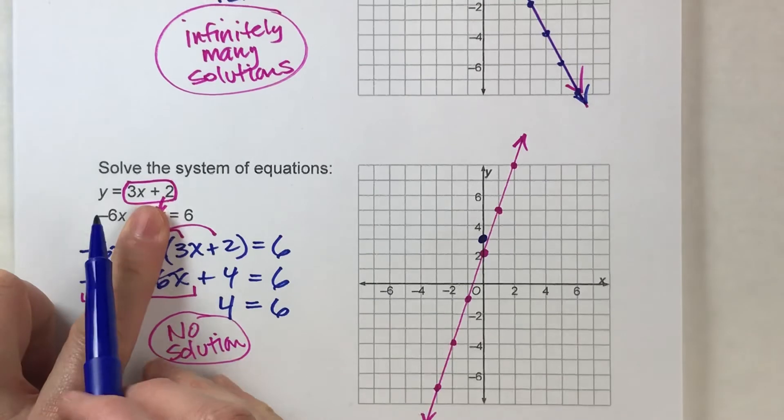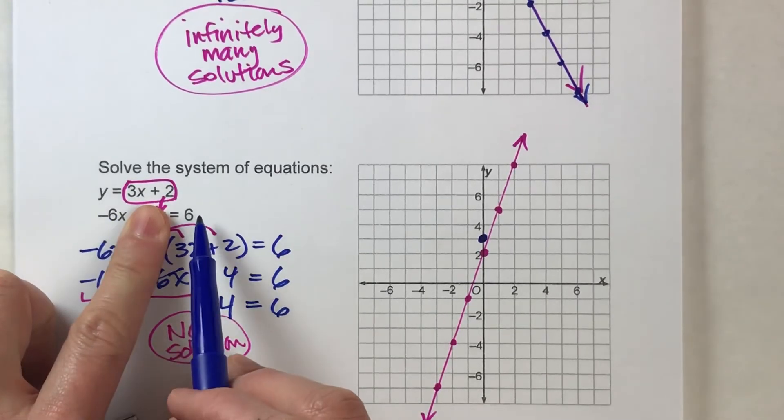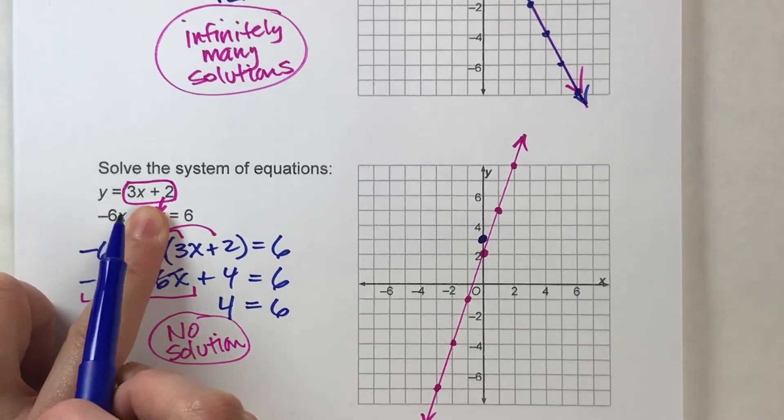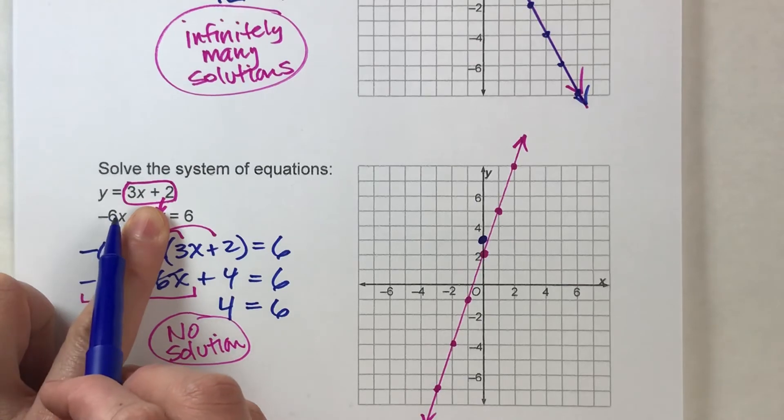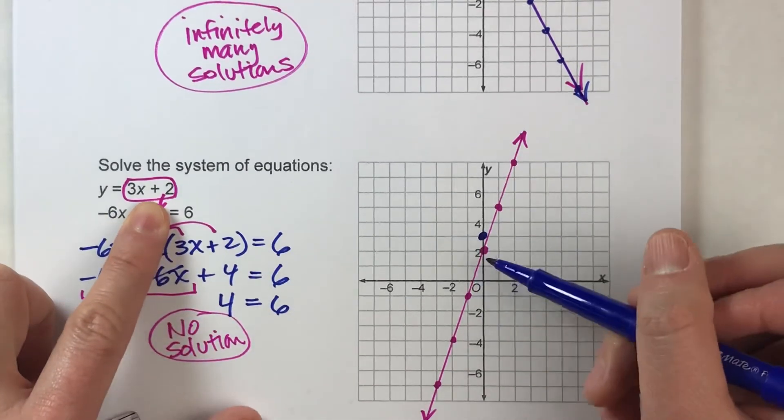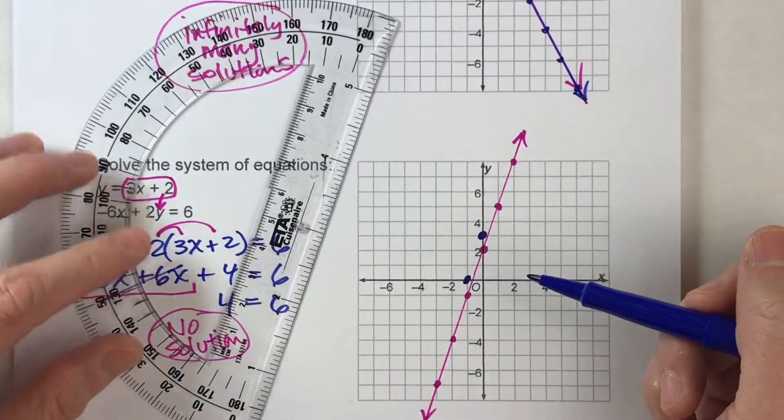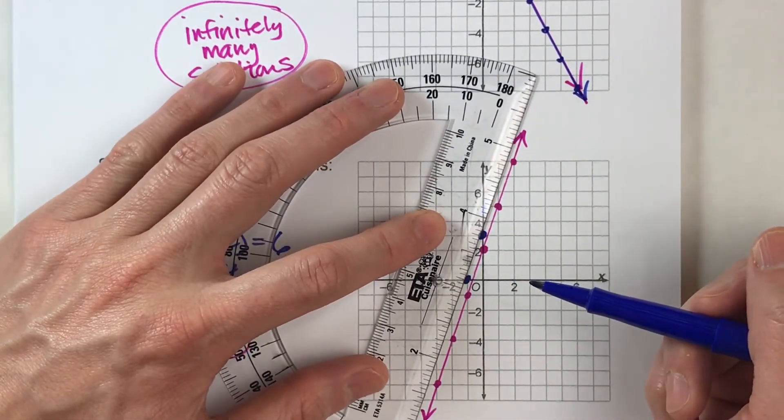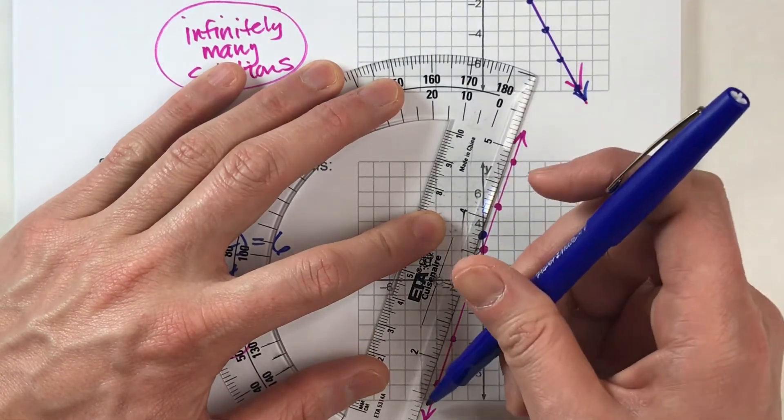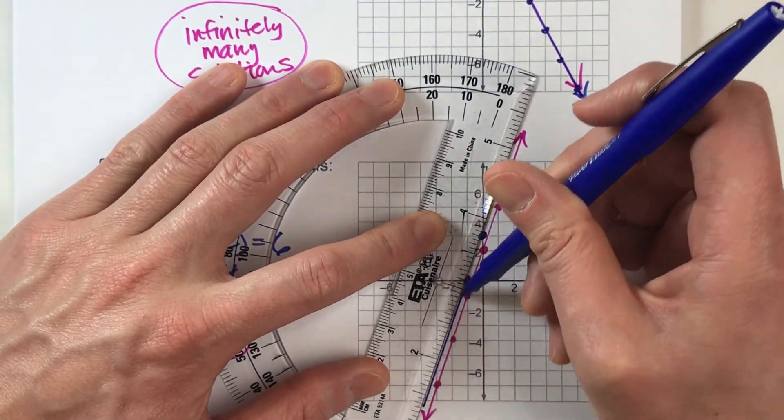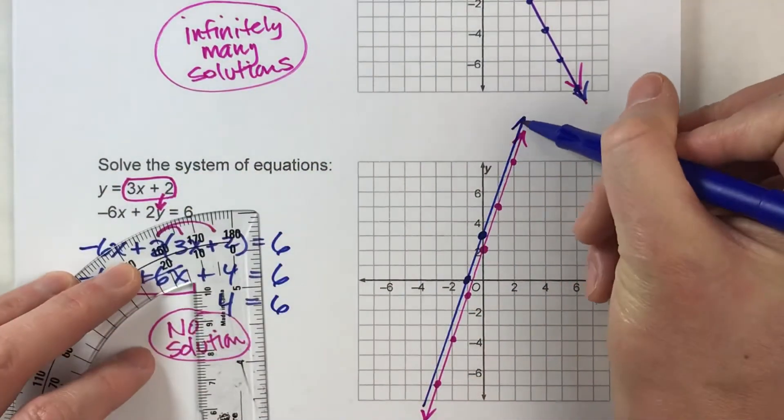Now what if y is 0? -6 times x will equal 6. What's x have to be? Well, -6 times -1 will equal 6. So -1, 0 is my second intercept. So let's draw this line. It's really close to the other one, but let's see. If I draw my line in here, there it is.